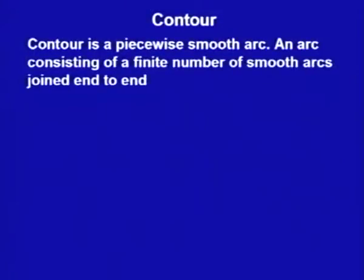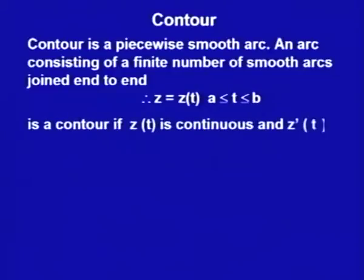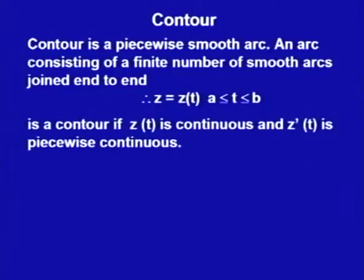So what is a contour? A contour is a piecewise smooth arc — that means an arc consisting of a finite number of smooth arcs joined end to end. If z equals z(t) defined on the interval [a, b] is a contour, then z(t) is continuous and z'(t) is piecewise continuous. Recall that for a smooth arc, the arc is differentiable and its derivative is not zero on the whole interval. For a contour, piecewise smooth means z'(t) is continuous and z'(t) is not zero at any point on [a, b].